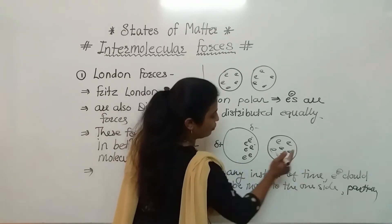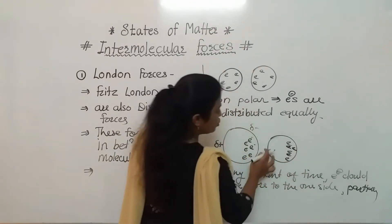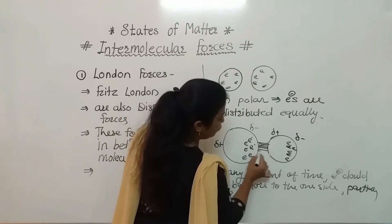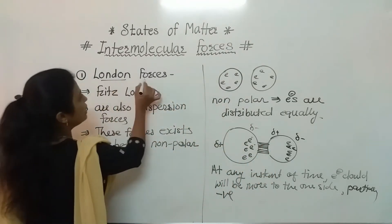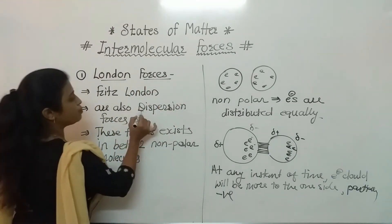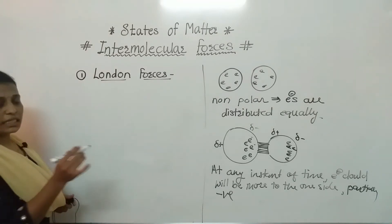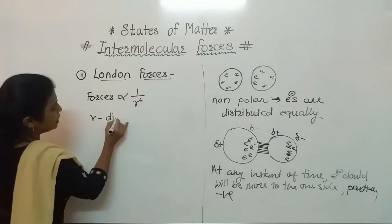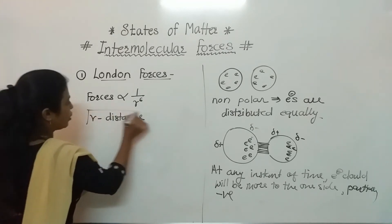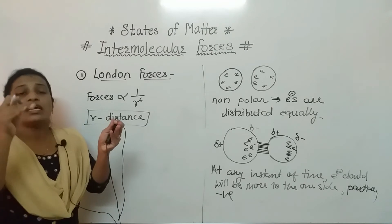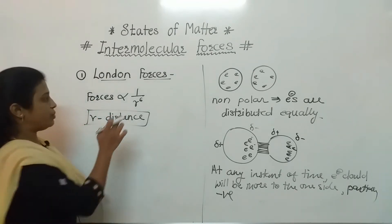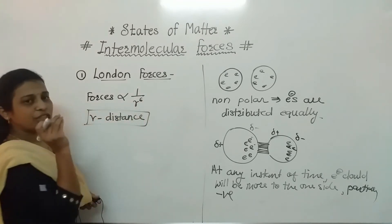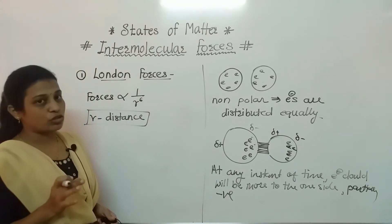The electrons in the second molecule move to the other corner, making that end partially negative and the near end partially positive. The attractive forces between these molecules are nothing but London forces, also called dispersion forces. Mathematically, these forces are proportional to 1/R⁶, where R is the distance between the molecules. As distance increases, force reduces, and due to the R⁶ power, even a small change in distance causes a large change in the force.